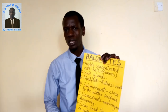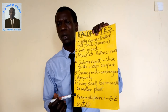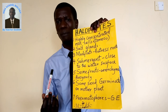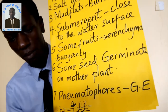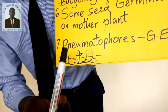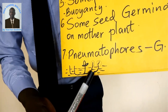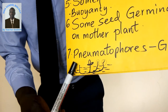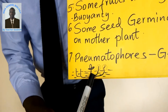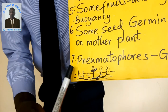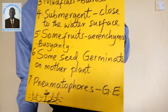Number seven, which is the last one: some have pneumatophores. Pneumatophores refers to breathing roots, which enable the plant to obtain oxygen from the atmosphere. As shown in the diagram, this is an example of a plant with roots that extend to various parts outside the water — above the water level — to absorb oxygen from the atmosphere.